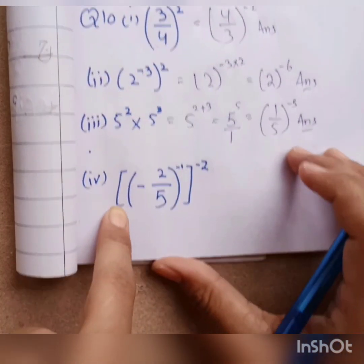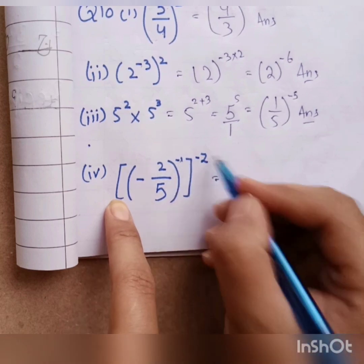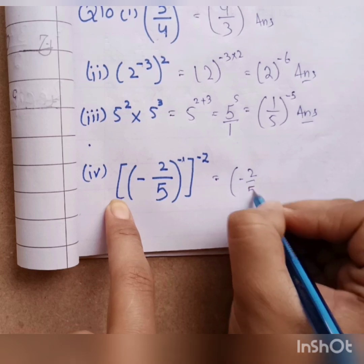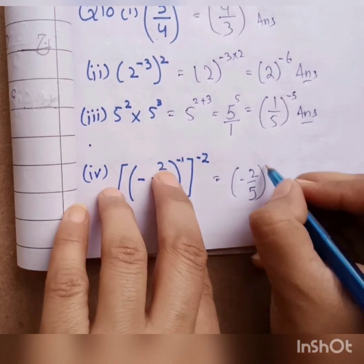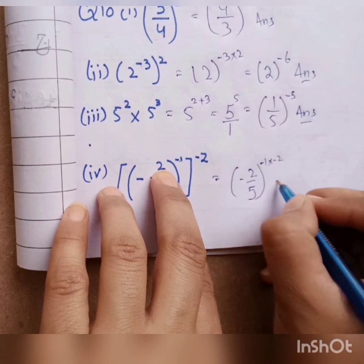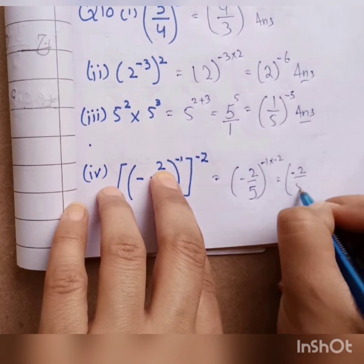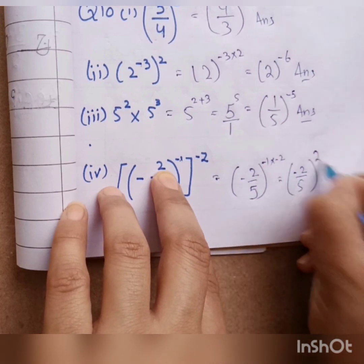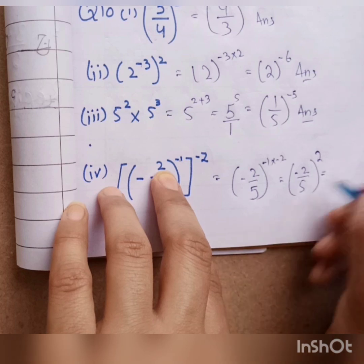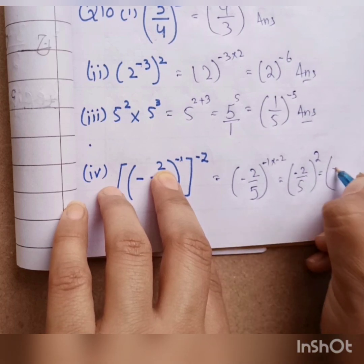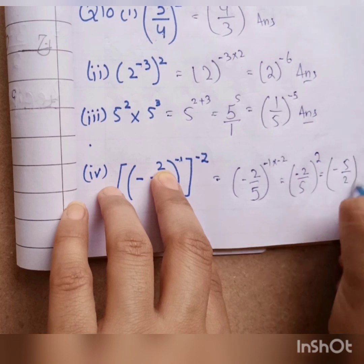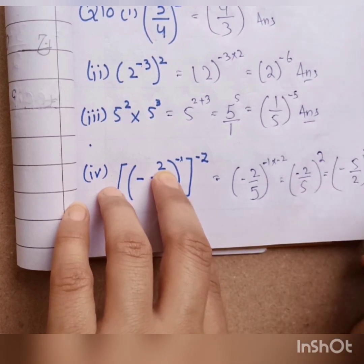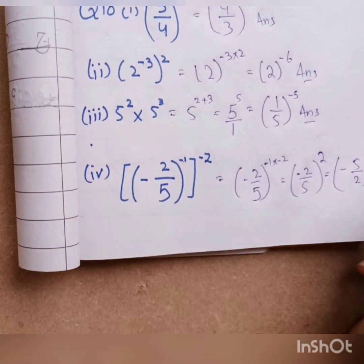Next part: we have 2 by 5 power — same process, we multiply powers. Minus 1 multiply by minus 2 gives us: minus minus is plus, so plus 2. Now we need it in negative form, so we change the number: it becomes 5 by 2, and the positive power converts to negative. This is the answer, and with this, question number 10 is complete.